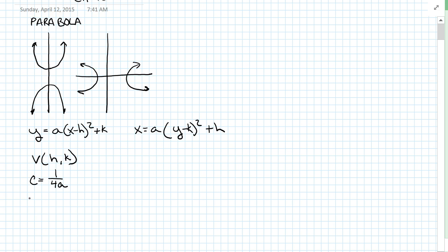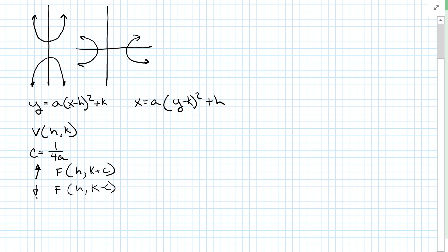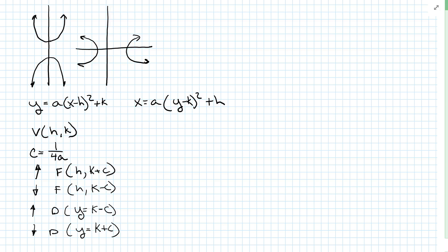If a is positive and the parabola is going up, the focus is going to be h comma k plus c. If it's going down, the focus is h comma k minus c. The directrix if it's going up would be y equals k minus c, and if it's going down the directrix would be y equals k plus c.